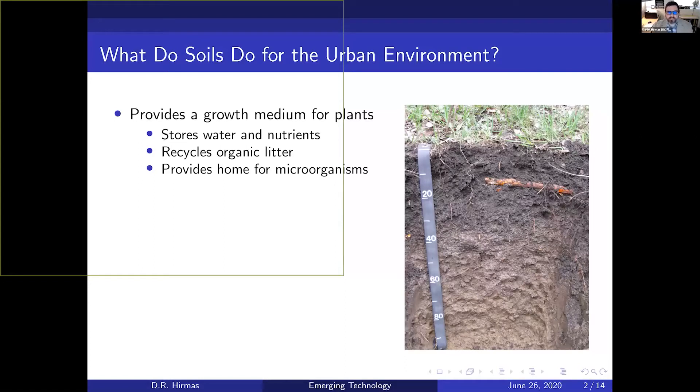To start this presentation, if we consider what soils do for the urban environment, there are three major categories. They provide a growth medium for plants—they store water and nutrients, recycle organic litter, and provide homes for microorganisms like mycorrhizae that are important for plants and the uptake of phosphorus.